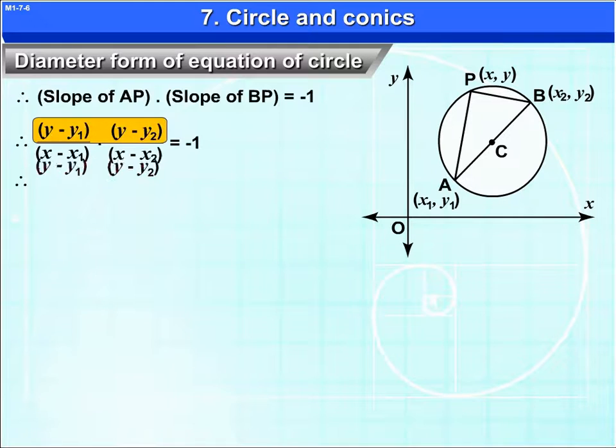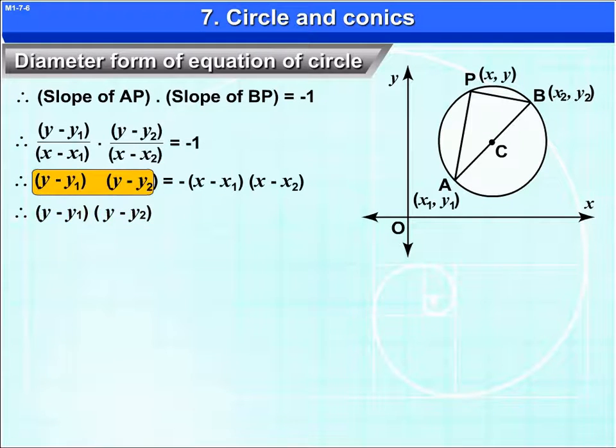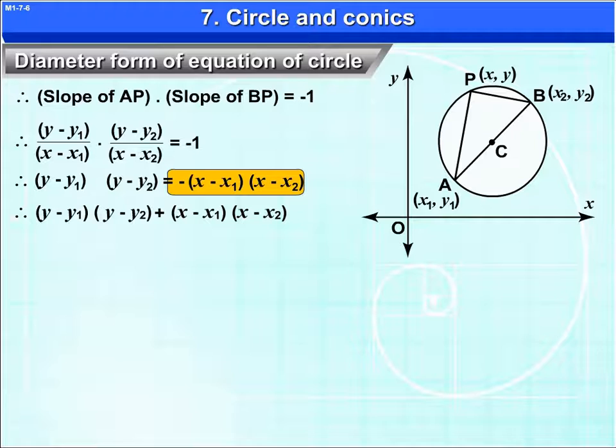Therefore, (y - y₁) into (y - y₂) is equal to minus (x - x₁) into (x - x₂). Therefore, (y - y₁)(y - y₂) + (x - x₁)(x - x₂) is equal to 0.